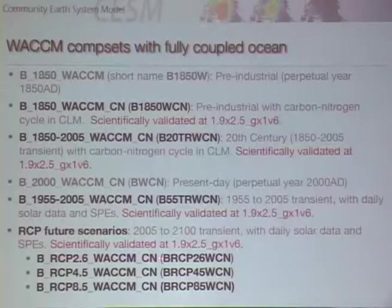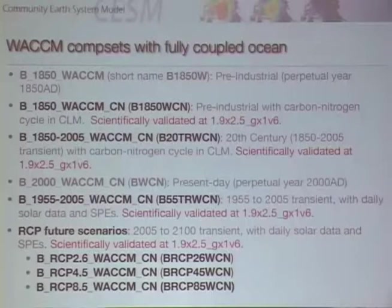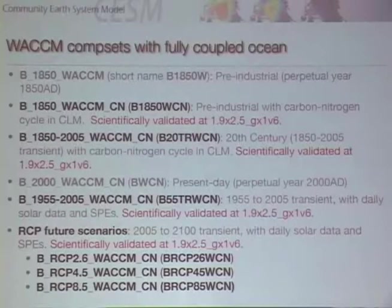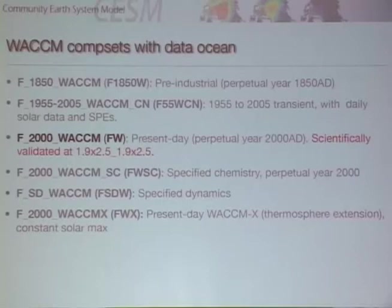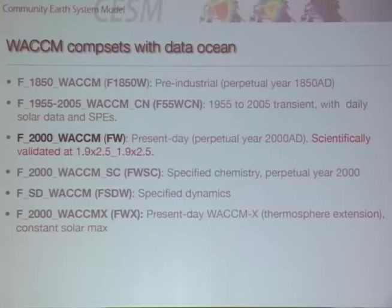Then we've got future scenarios — what they call RCPs, Representative Concentration Pathways. These numbers represent the climate forcing at 2100: 8.5 watts per meter squared at the end of the 21st century would be the climate forcing in that scenario, and 2.6 is a much weaker climate change scenario. For the F2000 case, this is a great debugging scenario — a perpetual year 2000. If you specify the surface temperatures, the model stays at that temperature, so it makes sense to run a repeating present-day case with a specified ocean to test something like a new gravity wave parameterization.